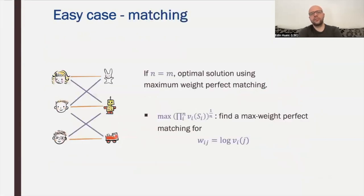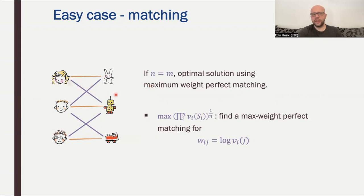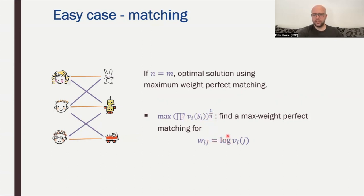Before designing an approximation algorithm, let us mention one easy case. If we have N agents and also the same number N of items, then the optimal solution can be found using maximum weight perfect matching. Since we have the same number of agents and items, to avoid zeros in Nash welfare we must give one item to each agent — this is a matching. Maximizing the geometric mean is equivalent to maximizing the sum of logarithms log v_{ij}, so a maximum weight perfect matching under these weights gives the optimal solution.